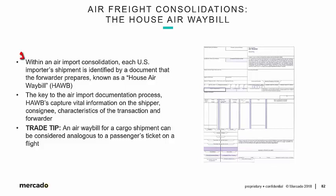We're going to show a blown-up version in upcoming slides, so don't worry about the visibility factor on these initial slides. Within an air import consolidation, each U.S. importer's shipment is identified by a document that the forwarder prepares known as a House Airway Bill — H-A-W-B — very similar to the House Ocean Bill of Lading that we saw in our module on ocean freight.